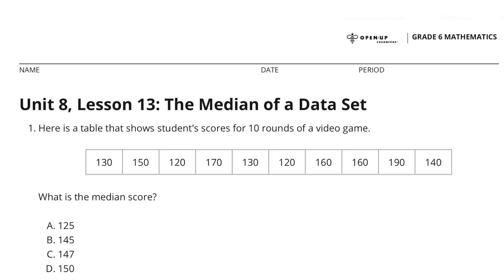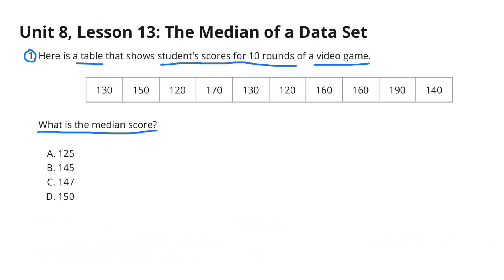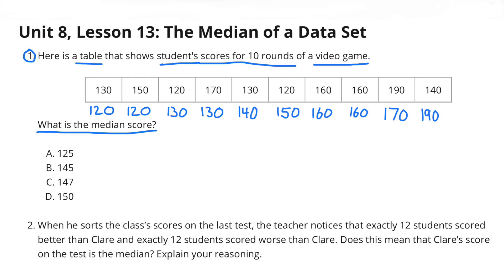Unit 8 Lesson 13: The median of a data set. Number one, here is a table that shows students' scores for 10 rounds of a video game. What is the median score? First, I place the order of the scores in the data set from least to greatest. To find the median score, I just needed to find the middle value.